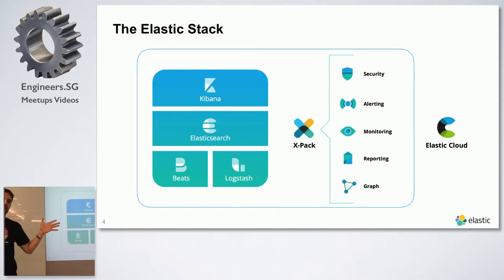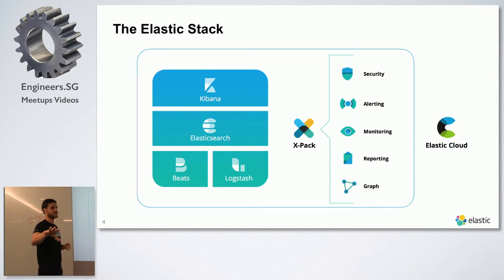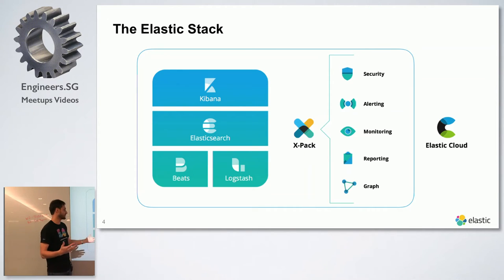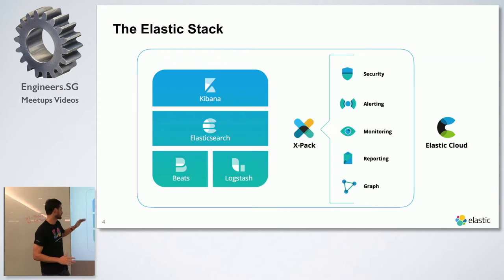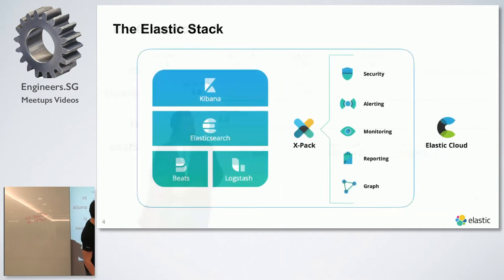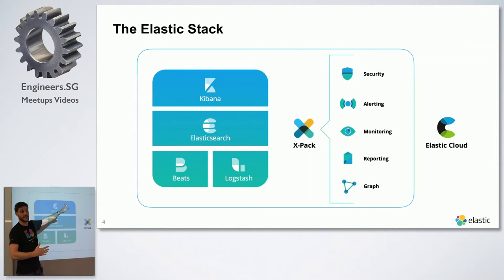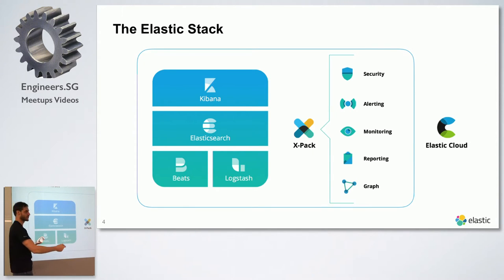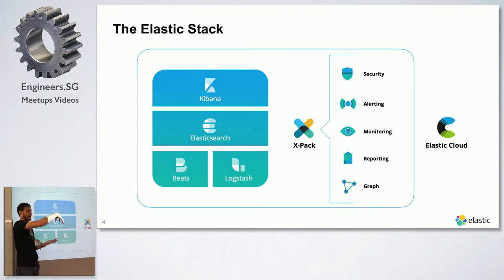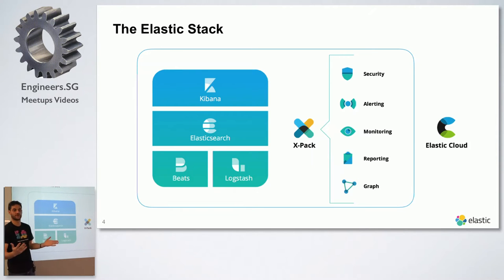This is what we call the Elastic Stack. We have Elasticsearch, Kibana, Logstash, Beats, and also a cloud service running on AWS. We also have what we call X-Pack — commercial extensions, paid software on top of this open source stack. But if you pay Elastic, you don't get an Enterprise version of Elasticsearch. There is only one version of Elasticsearch and it's open source. The core is open source.